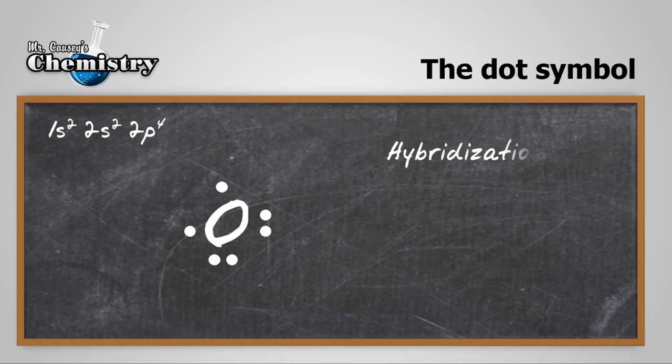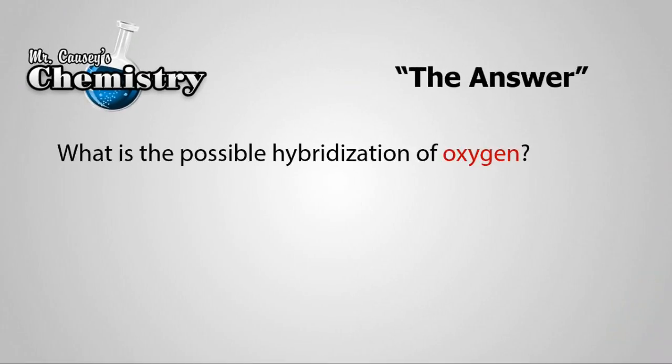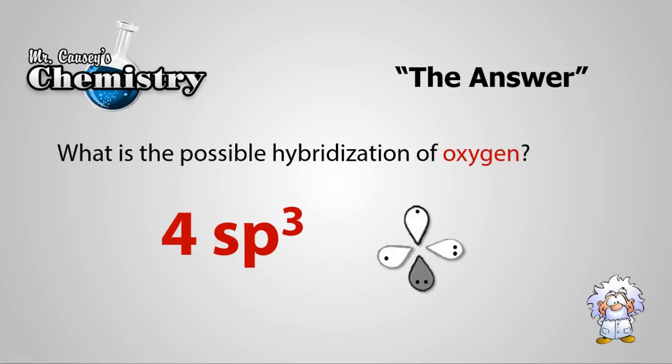So the hybridization is going to be an s orbital and 3p orbitals. And that will give us 4sp3. So the answer, what is the possible hybridization of oxygen? Well, it's 4sp3, which will give us a shape that will have an electronic shape, tetrahedral, but a molecular shape of angular, because we only have two bonding electrons there.